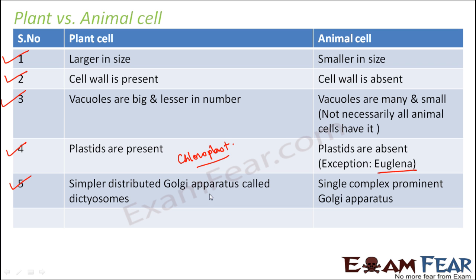In plant cells, Golgi apparatus are called dictyosomes and they are distributed throughout the cell. But in animal cells, there is just one network which is present and it is called the Golgi apparatus — one single prominent structure.